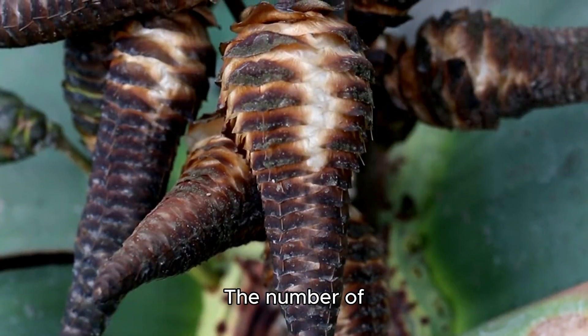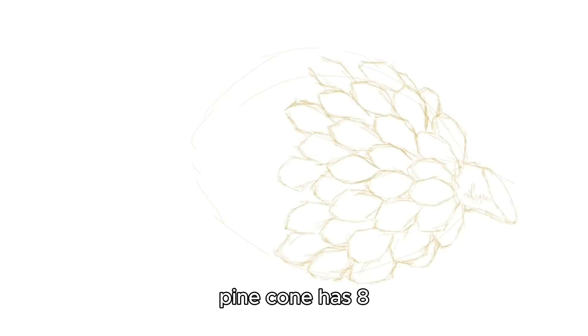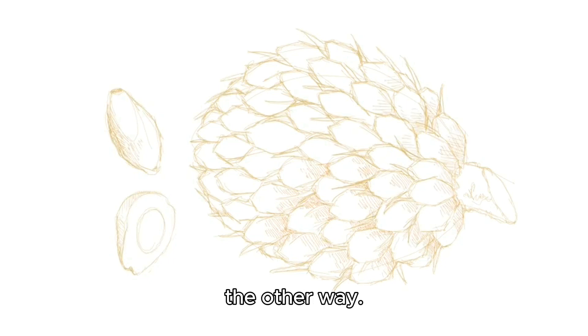The number of spirals on a pine cone is usually a Fibonacci number. For example, a typical pine cone has 8 spirals going one way and 13 spirals going the other way.